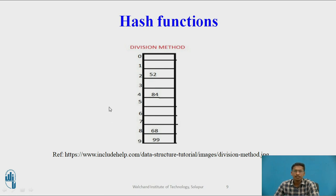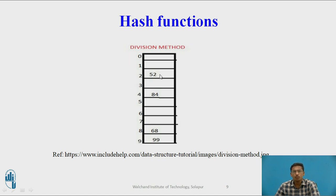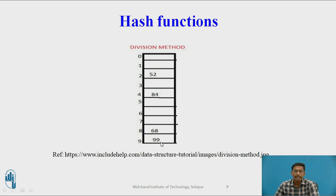Now we will see an example. Suppose I have an array of size 10 used as a hash table, and I am storing input values inside this hash table using the division method — performing mod operation with the size of the array, which is mod 10. Suppose the first number to insert is 52: 52 mod 10 is 2, so 52 is stored at index 2. Next element is 84: 84 mod 10 is 4, so 84 is stored at index 4. Next is 68: 68 mod 10 is 8, so 68 is stored at index 8. Next is 99: 99 mod 10 is 9, so 99 is stored at index 9.